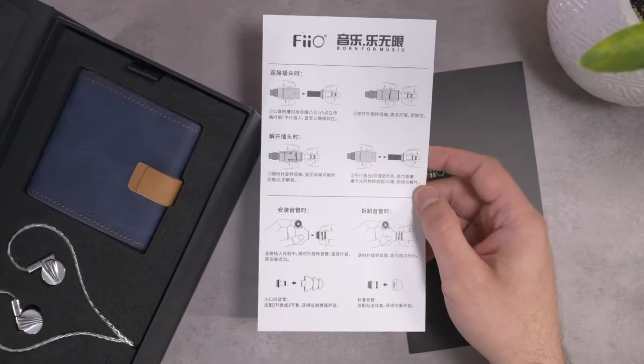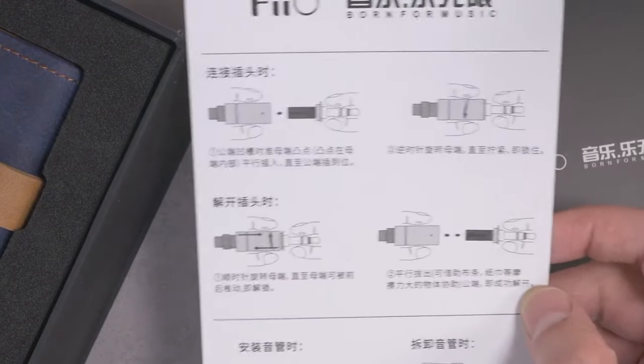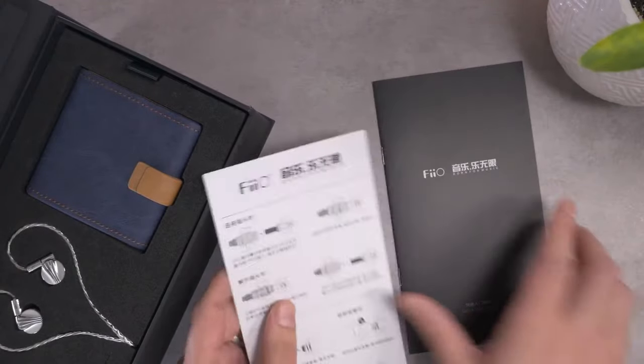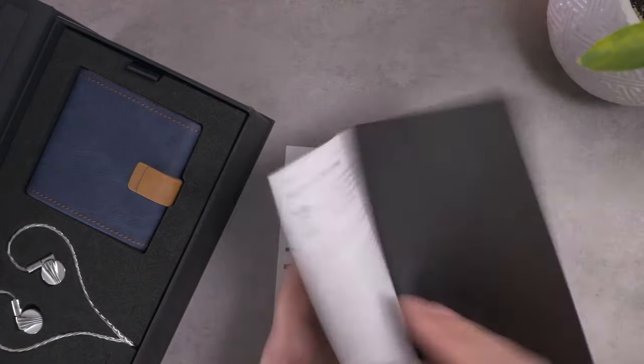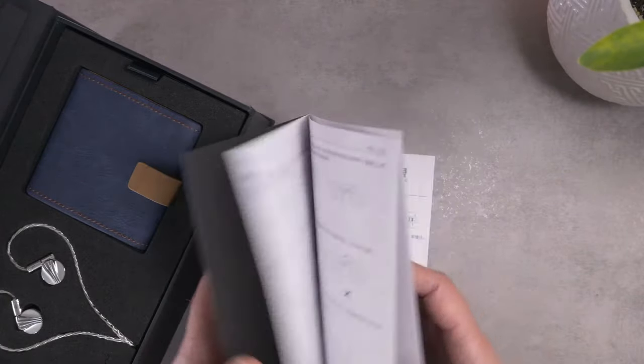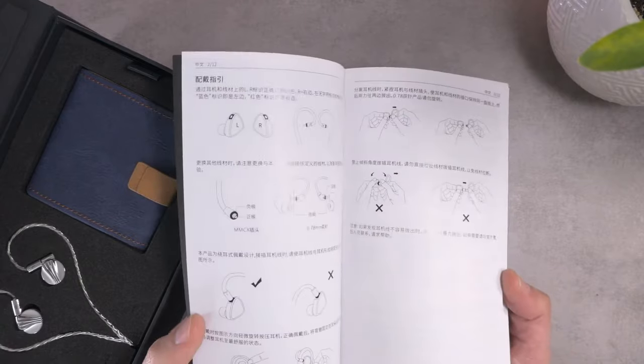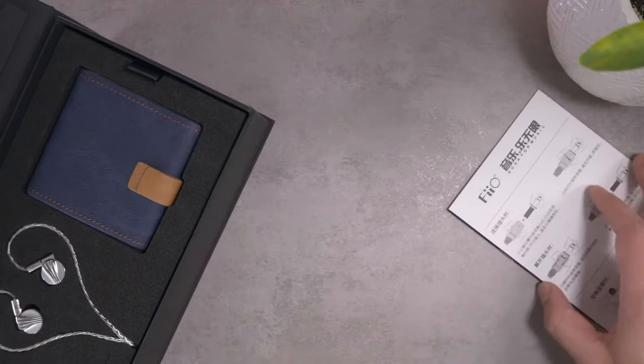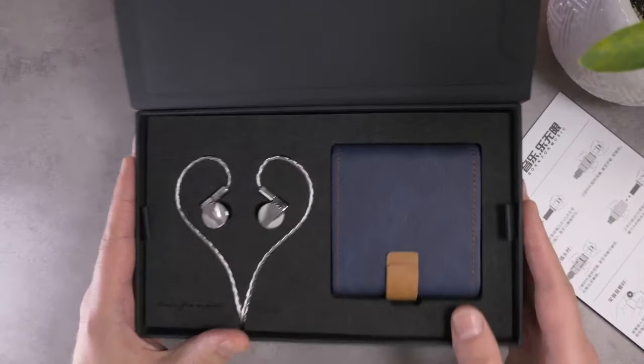I think Fiio is charging around $300 to $320, depending on where you find it. So, I guess for that much money, they give you a little bit nicer of an unboxing experience. This paperwork just kind of describes those swappable nozzles. It'll be interesting to see if those have a measurable effect on the frequency response. And then some sort of large manual. I'm going to say I don't want to spend time reading this right now, unfortunately.